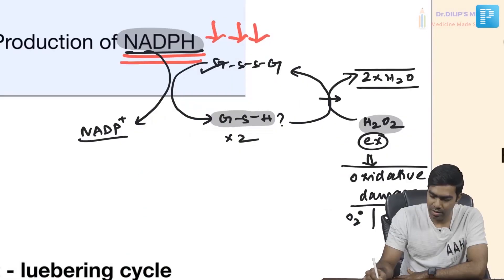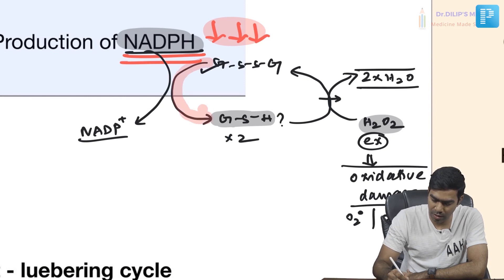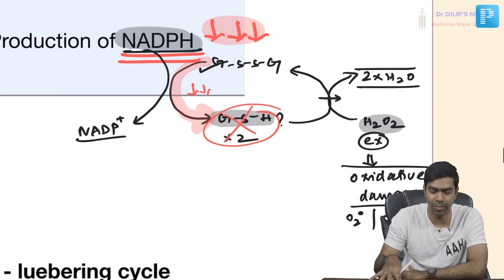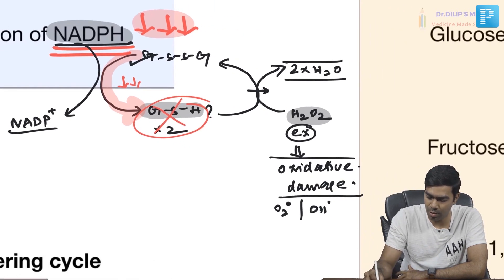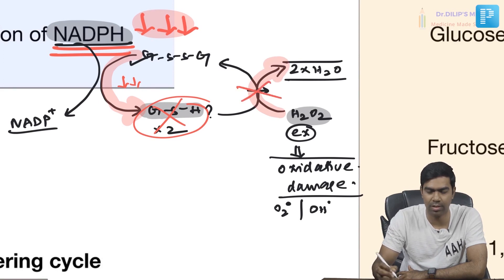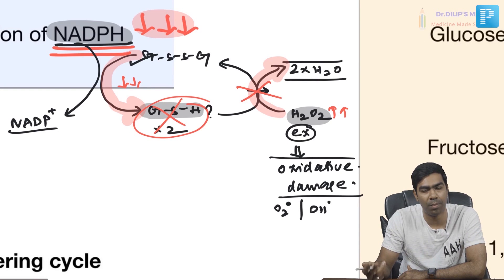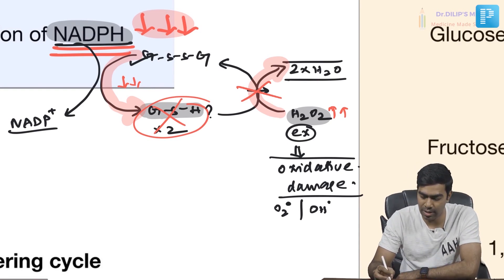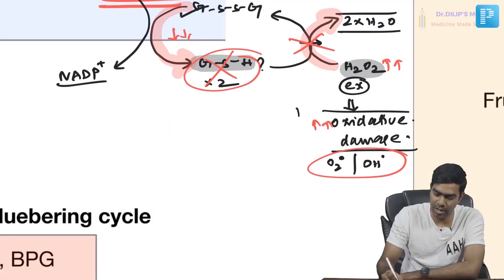With reduced NADPH, the conversion of glutathione to its reduced form is impaired, so reduced glutathione stores are depleted. This means oxidative molecules cannot be neutralized, their levels in the cell increase, oxidative damage increases, and free radical production also increases.